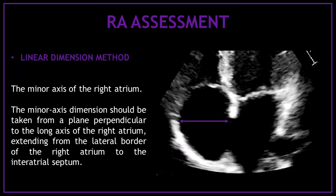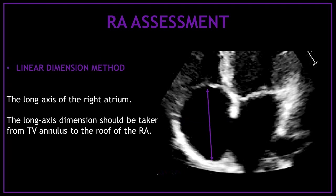We can assess the right atrial size by a linear dimension method. The first linear dimension method is measuring the minor axis of the right atrium. The minor axis dimension should be taken from a plane perpendicular to the long axis of the right atrium, extending from the lateral border of the right atrium to the interatrial septum. The second linear dimension method is measuring the long axis, taken from the tricuspid valve annulus to the roof of the right atrium.